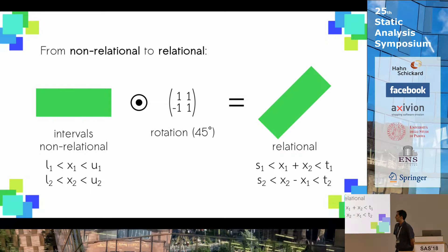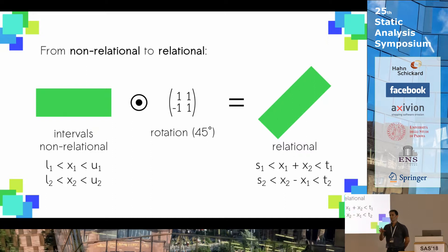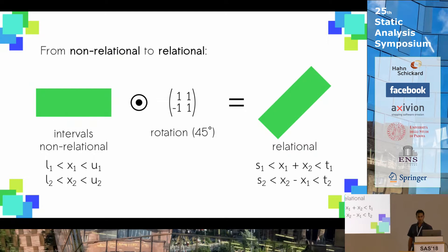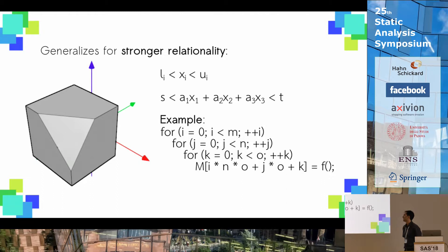Another point of interest is that we can go from a non-relational domain to a relational one simply by applying a certain type of affine or linear matrix — in particular with non-monomial matrices like rotation, shearing, and so on. We can move from the constraint type on the left, where every variable has its own constraint bounded by an upper and lower bound, to constraints in the form of a linear combination of variables with any coefficient bounded from below and/or above. And of course, it can be generalized to much stronger relationality — not just a couple of variables, but any type of linear constraint.